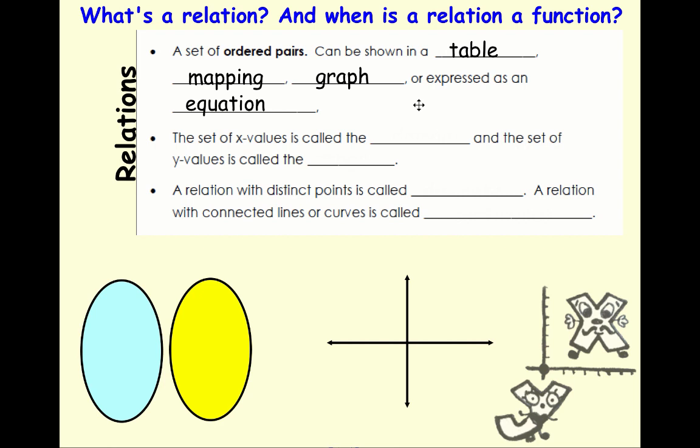When we're talking about inputs and outputs, a set of x values is called the domain, so there are inputs, and the outputs, or the y values, they are a range.